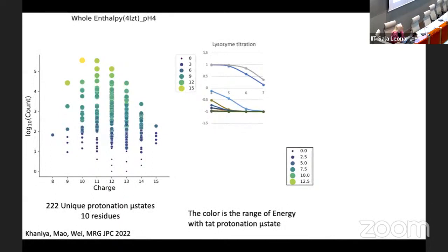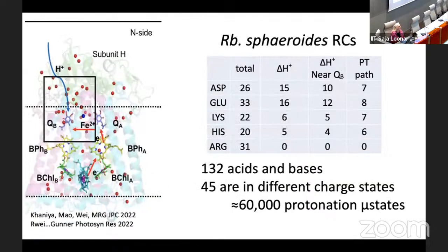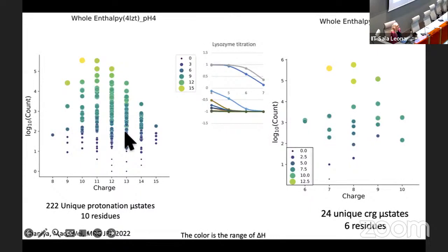Even a small protein like lysozyme has well more than one protonation state. This is a log scale for the occupancy in the Boltzmann distribution, so you mostly want to look at the top — there are like four to six microstates that would be fairly highly populated. These lower-probability ones might show up only 10 times in 25 million Boltzmann ensemble states.